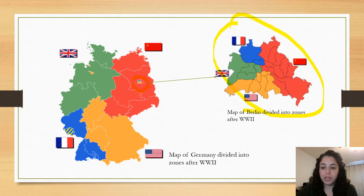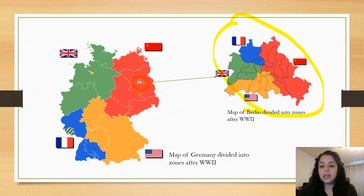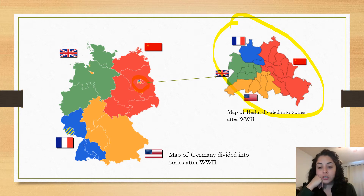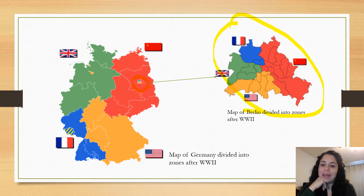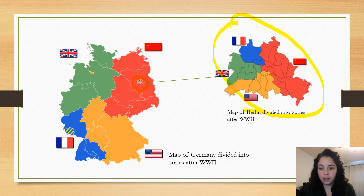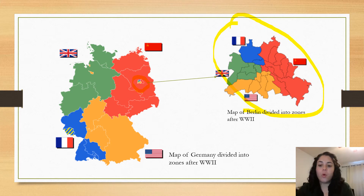We know that the country of Germany was divided into four. We know that the capital city was also divided into four. Today I'm going to show you pictures from the trip that I did to Berlin, which is going to be pretty cool. But basically, we have to think about why would this country be divided into the four winners. Why would Germany be divided into four parts by the winners of World War II?